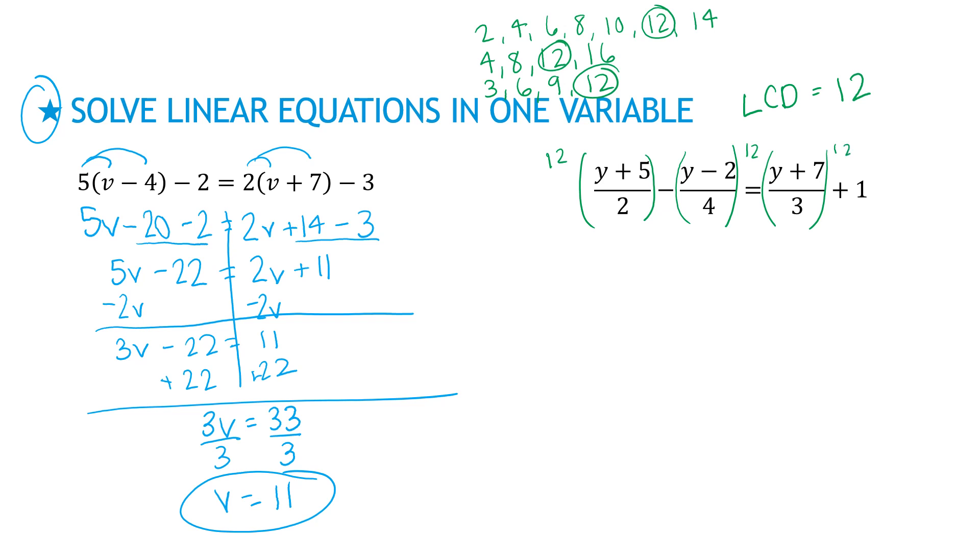I'm taking every single thing times 12, including that one that's there by itself. On this one, I'm going to end up with, this one's a little harder, 6 times y plus 5. Here, I'm going to reduce and get 3, so I have minus 3 times y minus 2. On the right side, I have reducing to 4, so I have 4 times the numerator, and then plus 12.